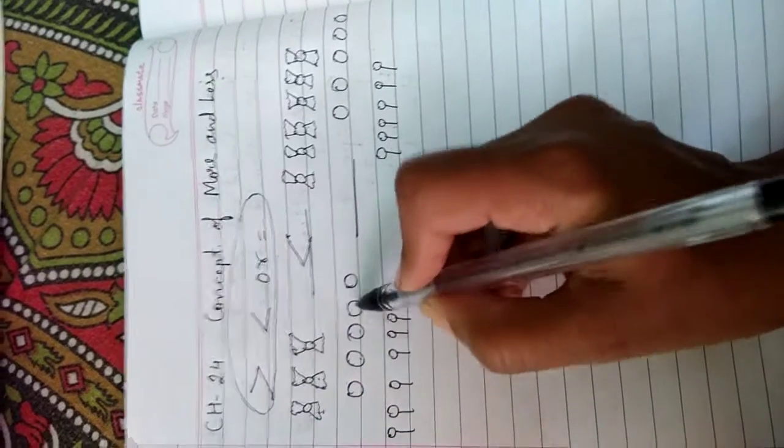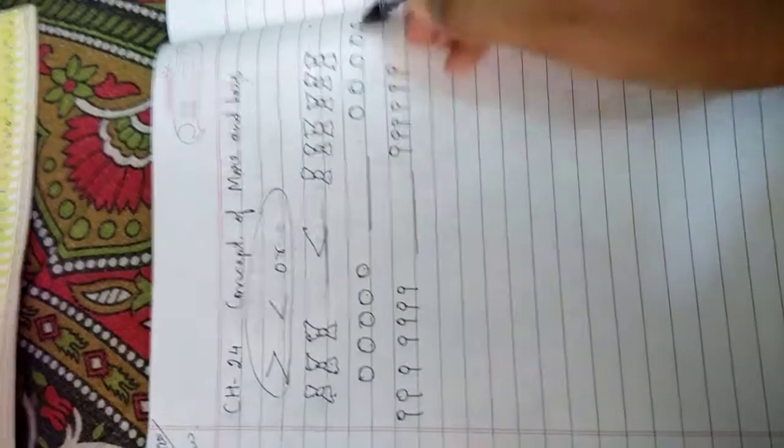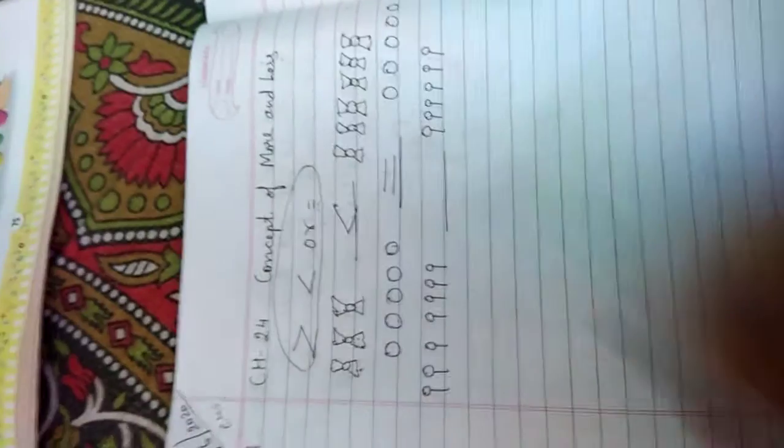Look here. 1, 2, 3, 4, 5. And here, 1, 2, 3, 4, 5. Both places are the same. If it is the same, then we will add equal to sign. Same sign, equal to sign.